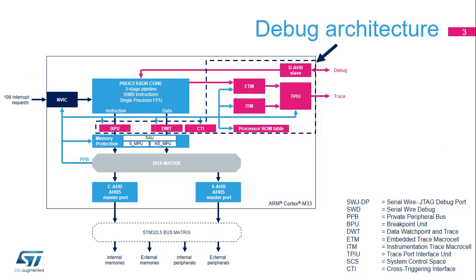All units involved in the debug process have memory mapped registers accessible through the private peripherals bus, or PPB, by both the core and the SWJDP. The debugger can access memory mapped resources while the processor is running. For example, a breakpoint can be set by the debugger by accessing the BPU connected to the private peripheral bus, while the processor is executing instructions.